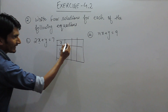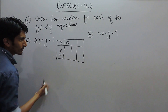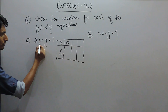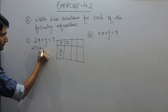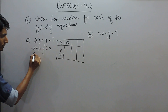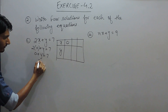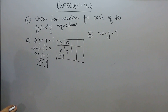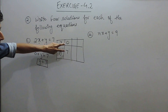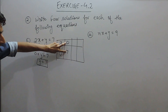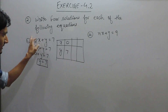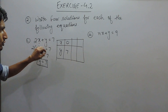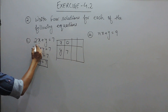First of all, put any value of x. Let's suppose the value of x is 0. If we put x equal to 0, then 2 times 0 plus y equals 7, so this becomes 0 and the value of y becomes 7. So this must be the first solution — the values x equals 0 and y equals 7 satisfy this equation.